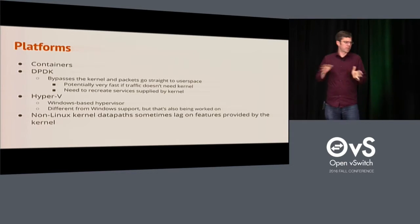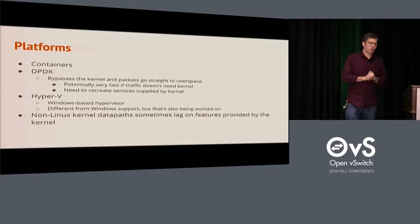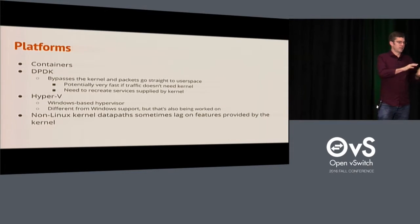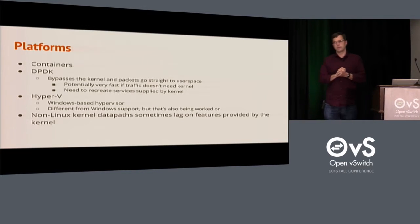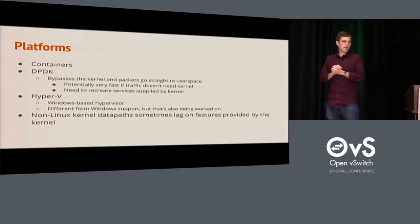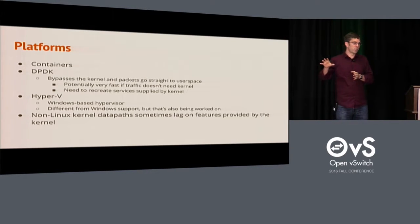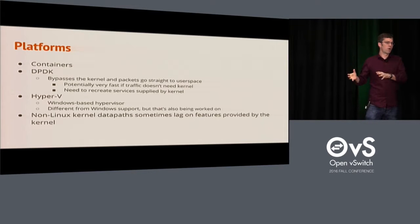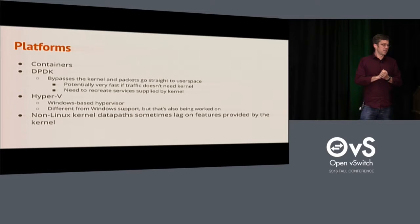Back to OVS platforms more broadly: we've been working on Linux for a long time. The container work doesn't really require anything different in OVS itself, but the glue that requires container systems to work with OVS needs to change, and we've been working with those communities. DPDK is a project by Intel to do fast data path development — it works by bypassing the kernel, so packets go directly from the NIC to user space, providing really good performance. The downside is that if you want to use kernel components like QoS or the connection tracker, you need to reimplement those, and those things are now being introduced to DPDK.